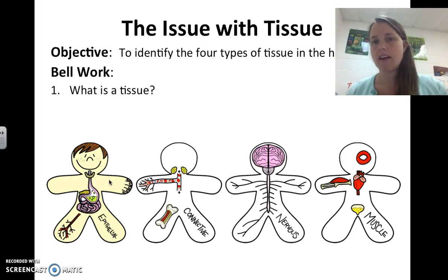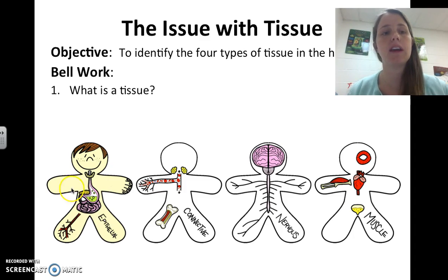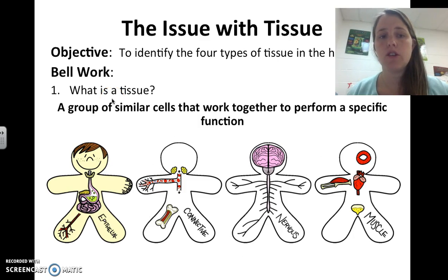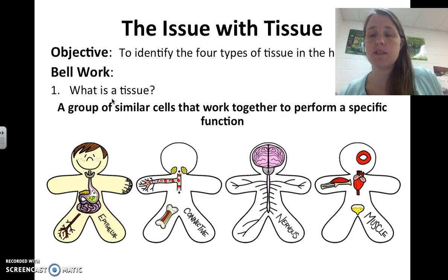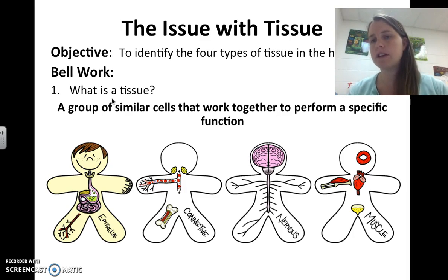We are looking at tissues in the human body. By the end of this you should be able to identify the four types of tissue in the human body. The first thing to understand is what a tissue is — this is a group of similar cells that work together to perform a specific function. You're made of trillions and trillions of cells, and each cell in different parts of your body is just a little bit different, even though it all has the same DNA.